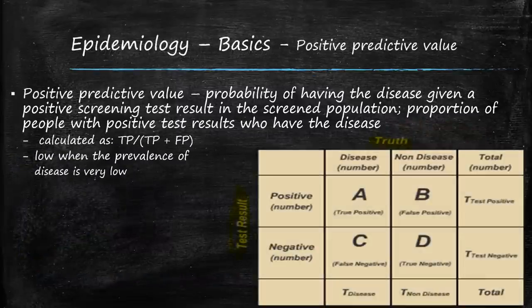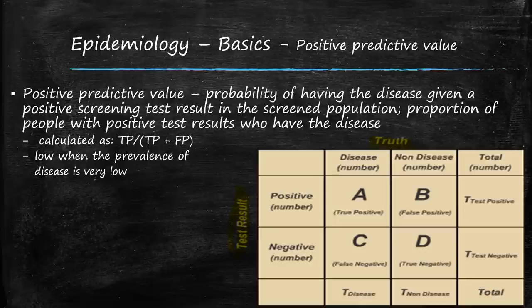Moving on to more basics of epidemiology — the positive predictive value, which is the probability of having the disease given a positive screening test in the screened population. It's the proportion of people with a positive test result who actually have the disease. This is what we call a two-by-two table, and we'll see this a few times in this presentation.